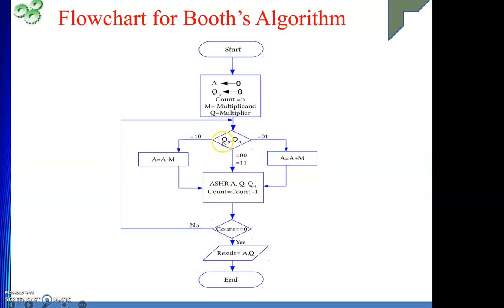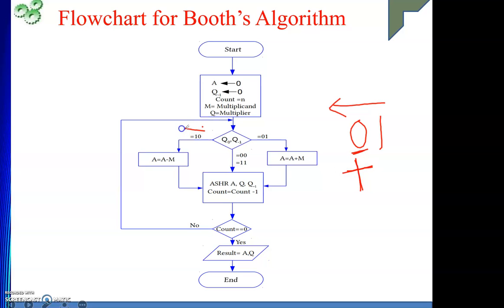We will check two consecutive bit positions in the Q register, that is in the multiplier. If the two consecutive bit positions are one-zero — meaning Q minus one is one and Q zero is zero — we are moving from one to zero, so we are going to perform an add operation. If we are moving from zero to one, that represents negative, so we are going to perform a subtraction operation.